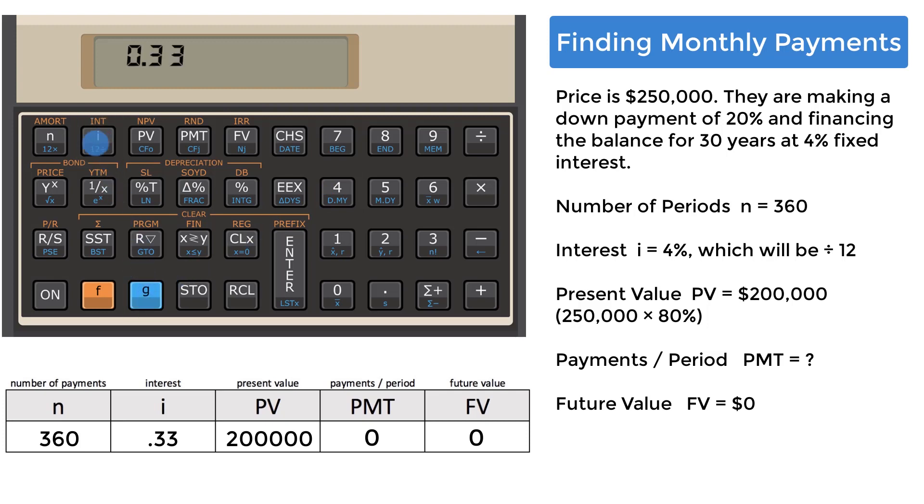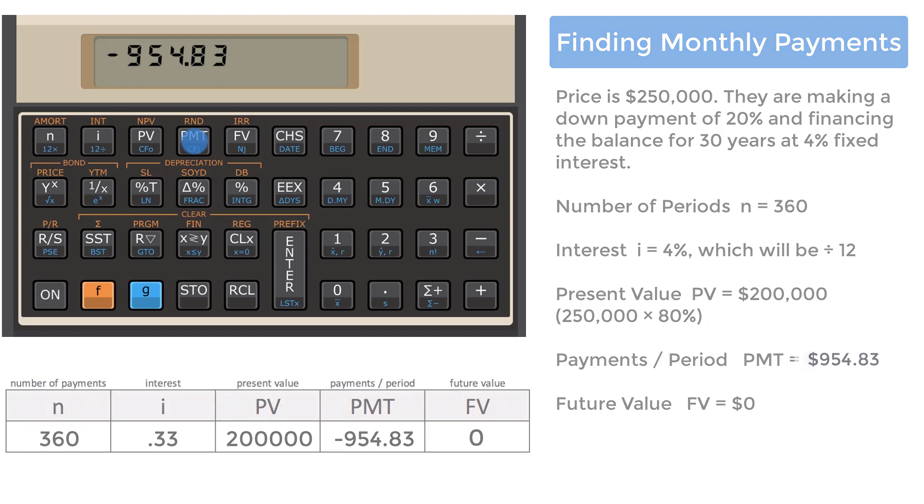To finish the calculation, press the payment register key, PMT. $954.83 will be their monthly payments.